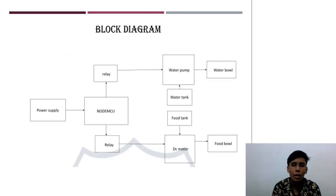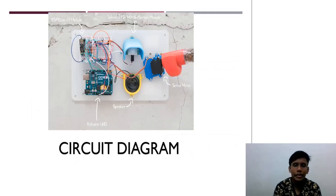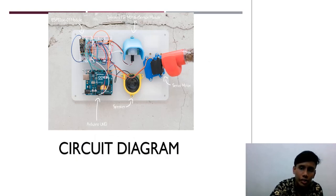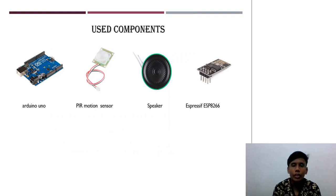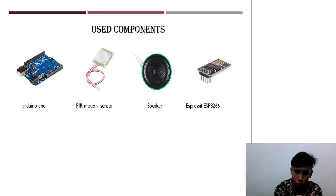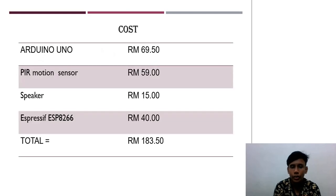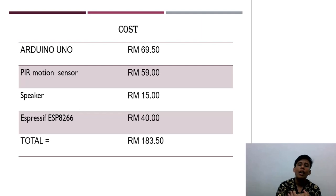This is the block diagram showing how the project will be built. This is the circuit diagram — an example of how the project is going to look. The red colored thing is the food dispenser, and that's the bottle for dispensing food. The components used in this project include: Arduino Uno, PIR Motion Sensor, Speaker, and ESP8266. The total cost is going to be around 183 ringgit and 50 cents, which is within the budget of below 200 ringgit.